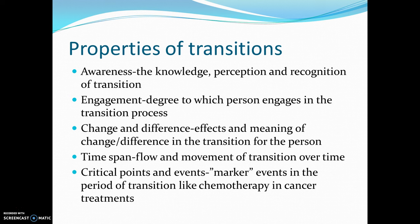The fourth property is time span — how the transition is experienced over time. It ebbs and flows much like the waves we talked about at the beginning. The last property that Malise identifies is critical points and events: these are marker events that occur in a period of transition. The example she uses is chemotherapy, which is a marker event in cancer treatment.